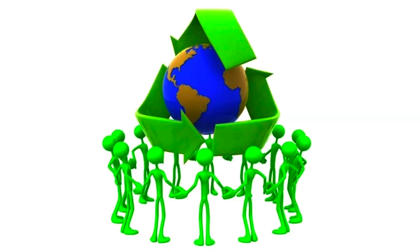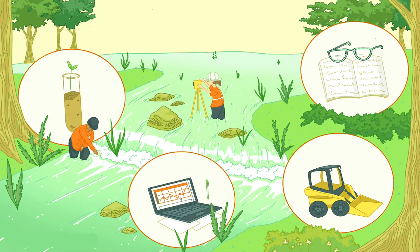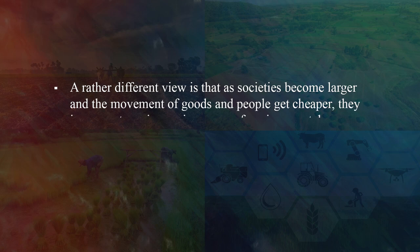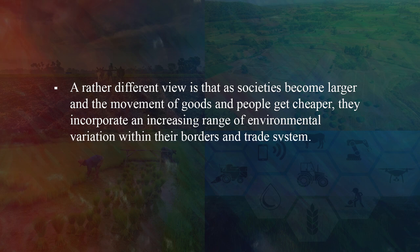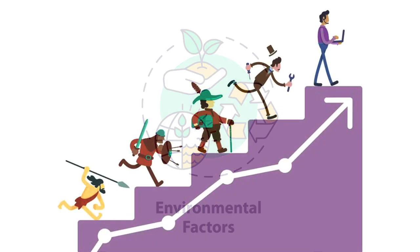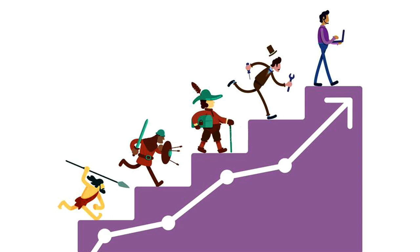In agrarian societies, some of the simple correlations between social complexity and environment begin to disappear. One view is that humans with this technology have moved a large step toward controlling their environments, are less dependent on them, and hence show fewer correlations between the environment and technology-related traits. A rather different view is that as societies become larger and the movement of goods and people cheaper, they incorporate an increasing range of environmental variation within their borders and trade systems. But environmental factors may still play a strong role as variables that affect the internal structure and history of a society in complex ways.